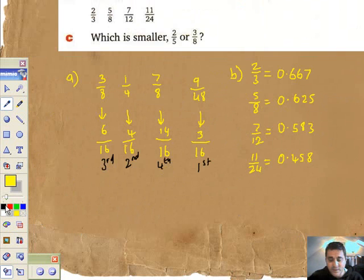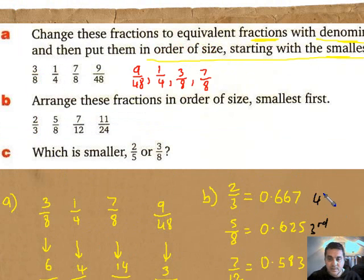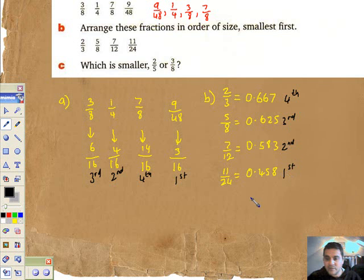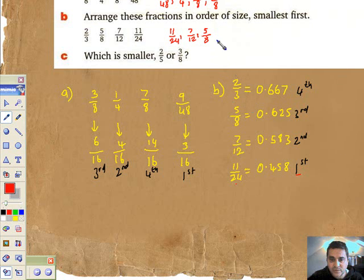Smallest first. Who is the babiest of them all? Go back to smaller than 0.5. So that's the smallest one, so that's going to go first. And then this one is next. And it's actually in reverse order. That's third, because 0.6 beats 0.5. And 0.62 is less than 0.66. So the first one shall be last, and the last one shall be first. The first one was 11/24, then 7/12, then 5/8, and then 2/3 last of all, which is the biggest.